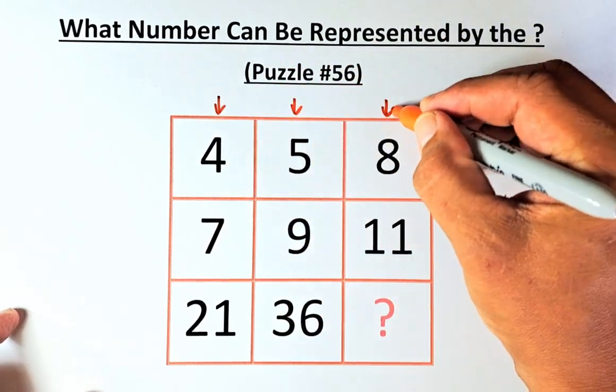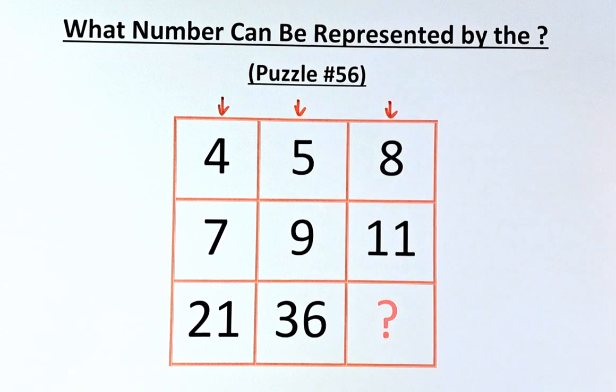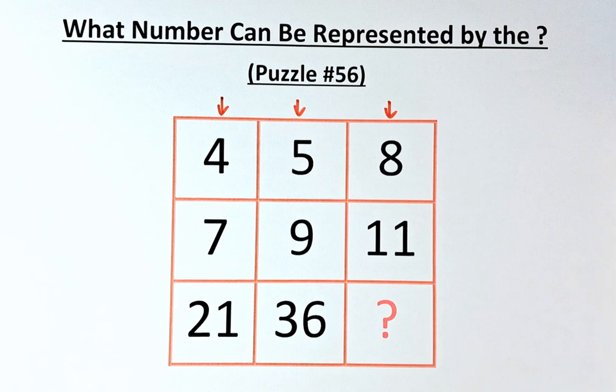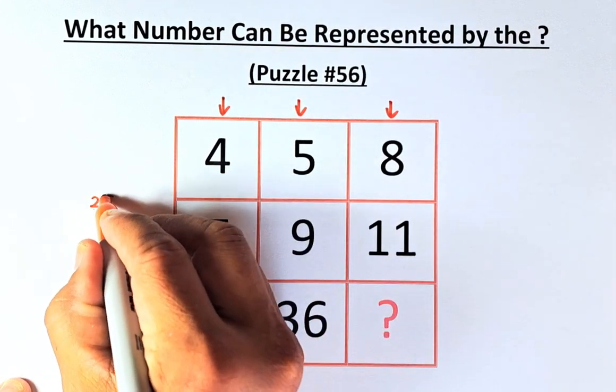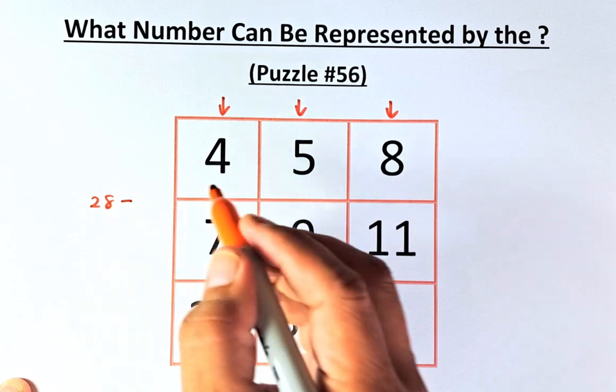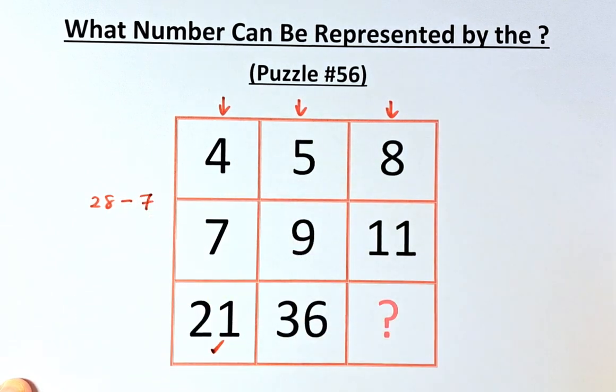So we need to manipulate 4 and 7 to get 21, 5 and 9 to get 36, and 8 and 11 to get the question mark. To do that, we are going to multiply 4 by 7. That will give us 28. And then we minus the second number, which is 7. 28 minus 7, that is 21.